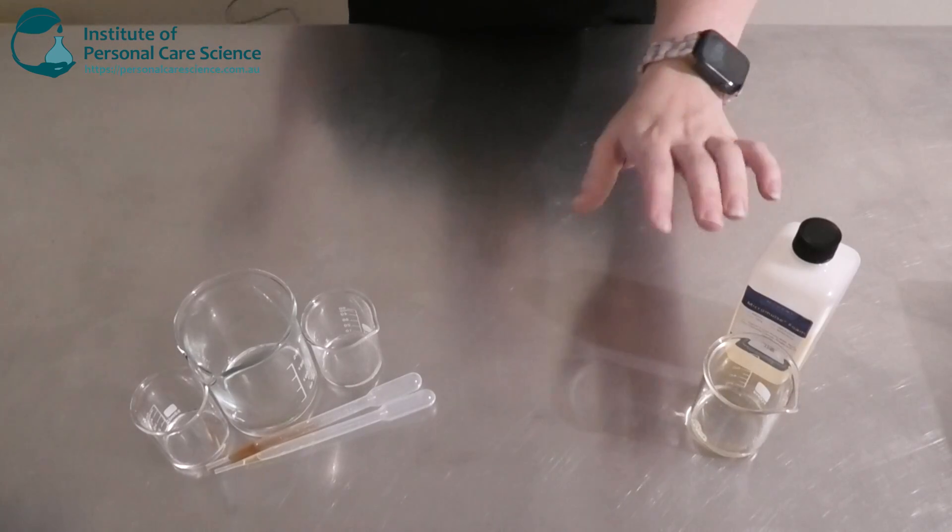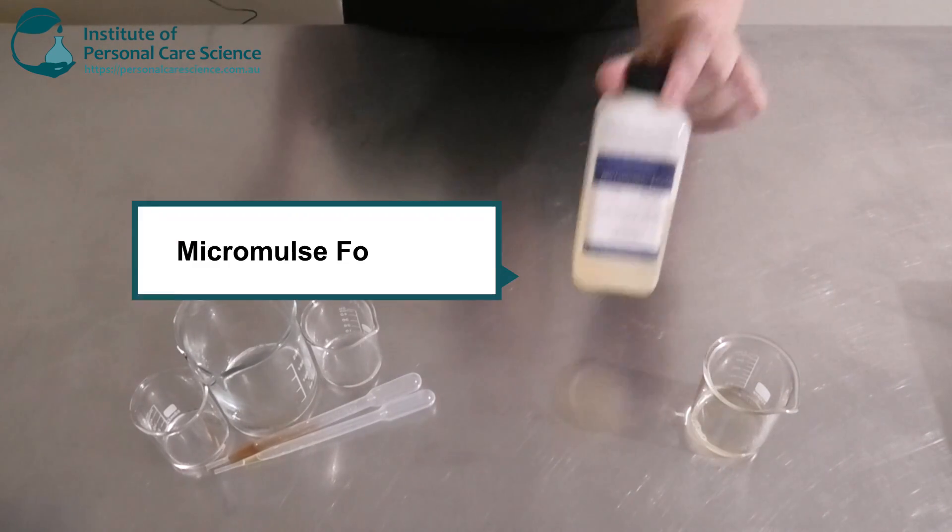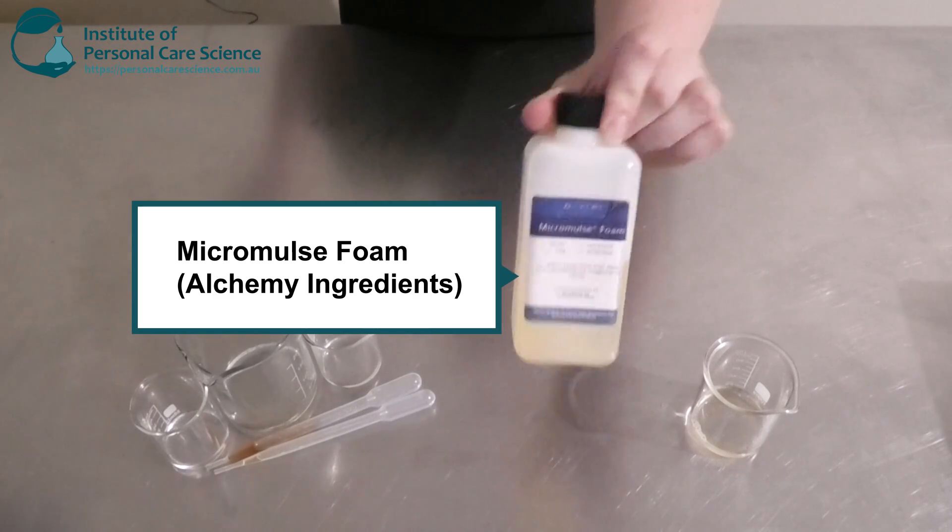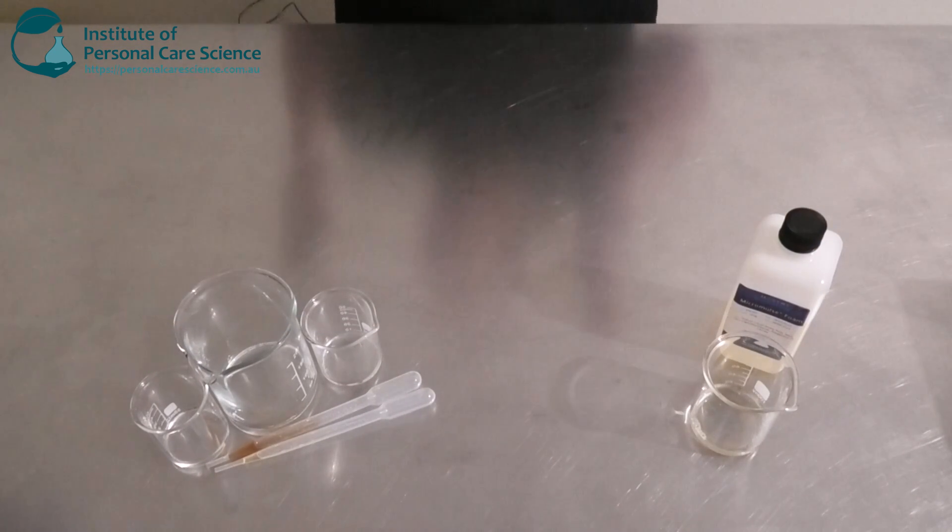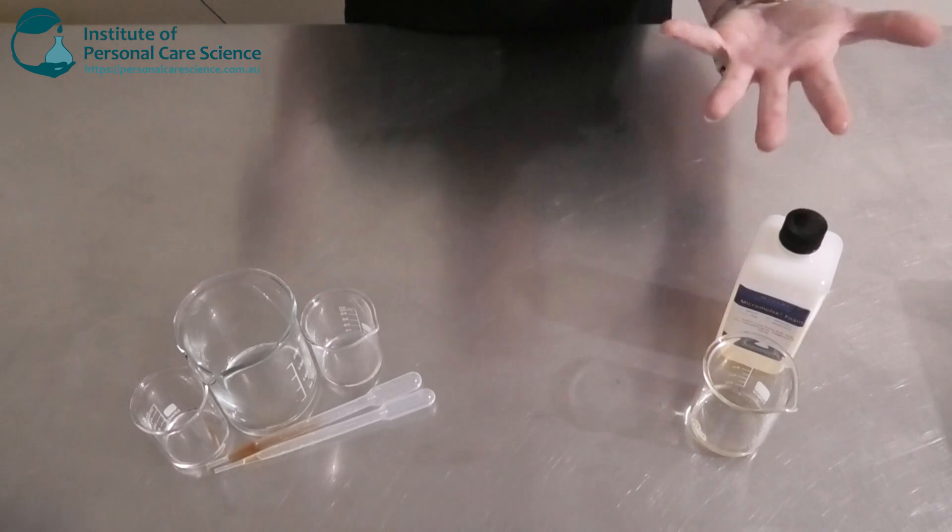Firstly here in my phase A I have my Micromulse Foam by Alchemy Ingredients. This is a natural alternative to your synthetic surfactant materials. It's based off of amino acid surfactants and is oil based.